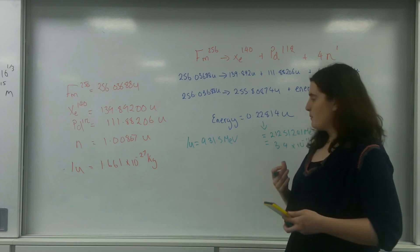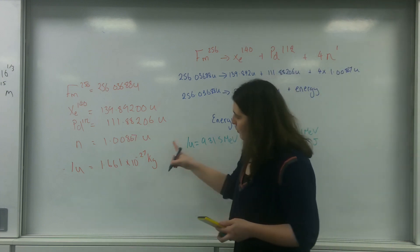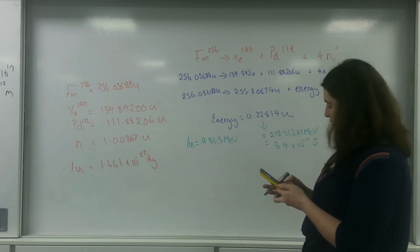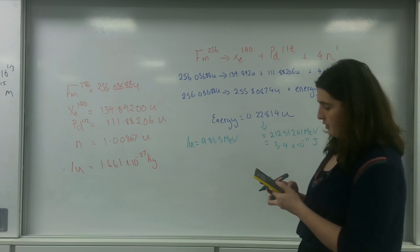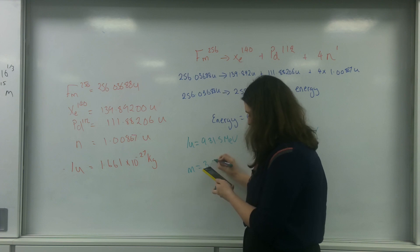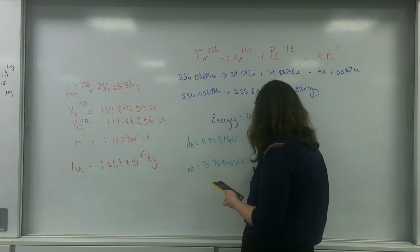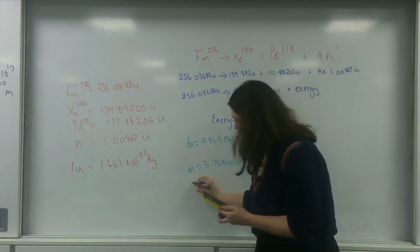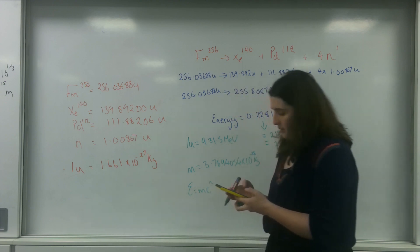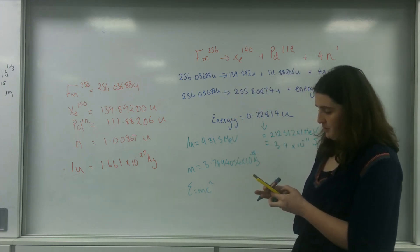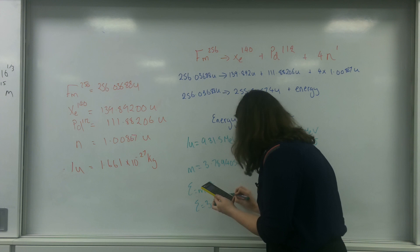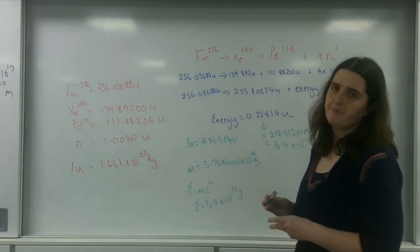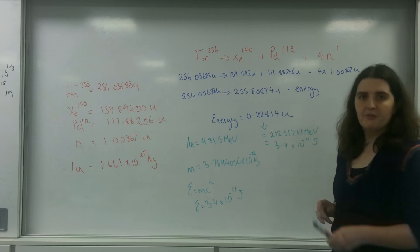I'm going to use another way - I'm going to use E equals mc squared here. So I know 1 U is that. I've got 0.22814 times 1.661 times 10 to the minus 27, so the amount of mass I have is 3.7894054 times 10 to the minus 28 kilograms. Using E equals mc squared, times by 3 times 10 to the 8th squared, I get an energy of 3.4 times 10 to the minus 11 joules. Both the same method, same answers.